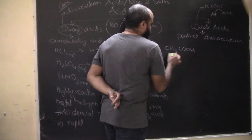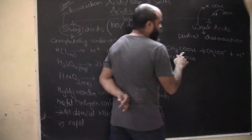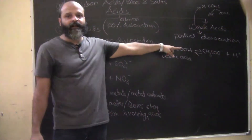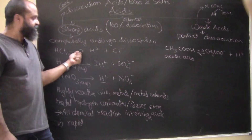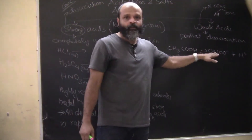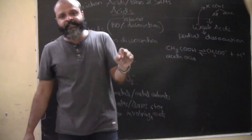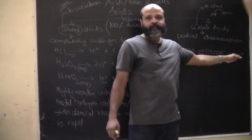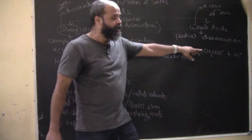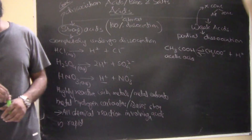For example, acetic acid (CH₃COOH) undergoes dissociation into CH₃COO⁻ plus H⁺. In this reaction we do not have a single-sided arrow - it will be a double-sided arrow. A double-sided arrow means the reaction proceeds in both directions, because not the entire CH₃COOH gets converted - it is partial dissociation. Some CH₃COOH remains undissociated, confirming it is a weak acid.